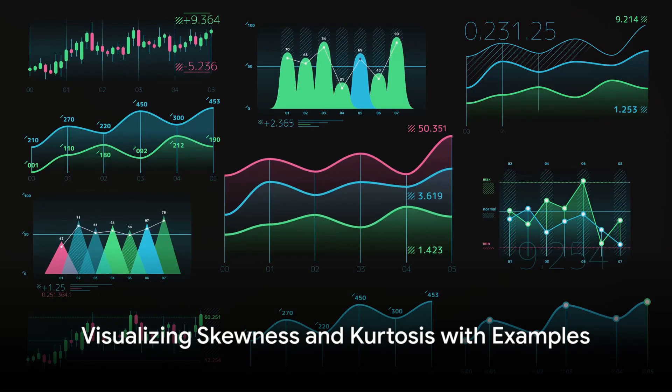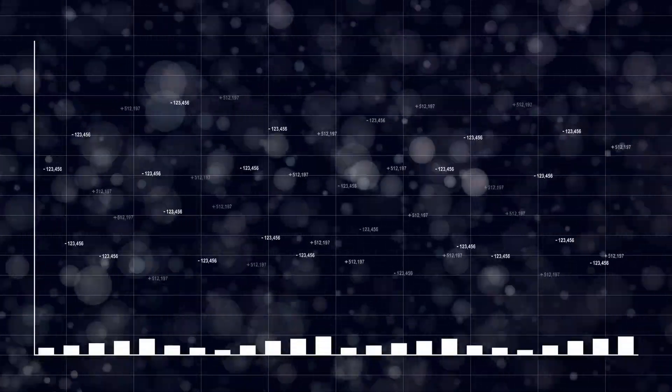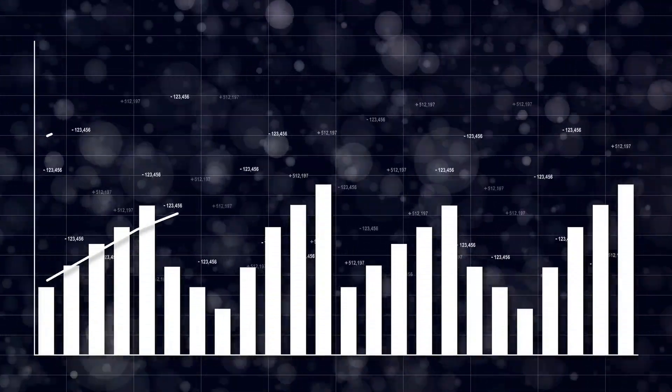Visualize this. You're analyzing heights in a population. If the majority are around the average but a few are extremely tall, that's high kurtosis.